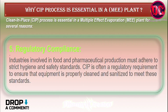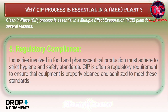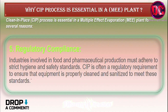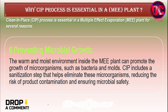Fifth, regulatory compliance: industries involved in food and pharmaceutical production must adhere to strict hygiene and safety standards. CIP is often a regulatory requirement to ensure that equipment is properly cleaned and sanitized to meet these standards.